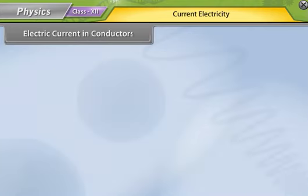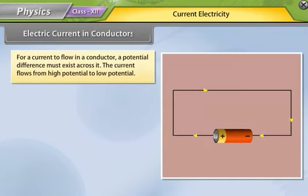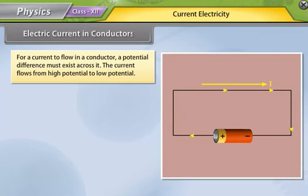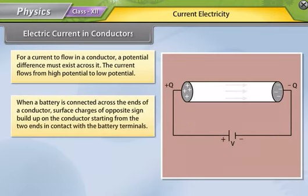For a current to flow in a conductor, a potential difference must exist across it. The current flows from high potential to low potential. When a battery is connected across the ends of a conductor, the surface charges of opposite sign build up on the conductor.